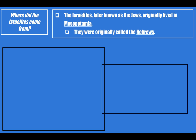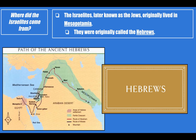Our first question is: where did the Israelites come from? The Israelites, later known as the Jews, originally lived in Mesopotamia — which is cool because we already studied Mesopotamia. This group of people originated there and were originally called the Hebrews. The words Israelite, Israel, and Hebrews are all referring to descendants of the Jewish people. You can see the path of the ancient Hebrews, where they went from the city-state of Ur in Mesopotamia, traveling north through the Fertile Crescent, eventually down into Canaan, which is modern-day Israel.